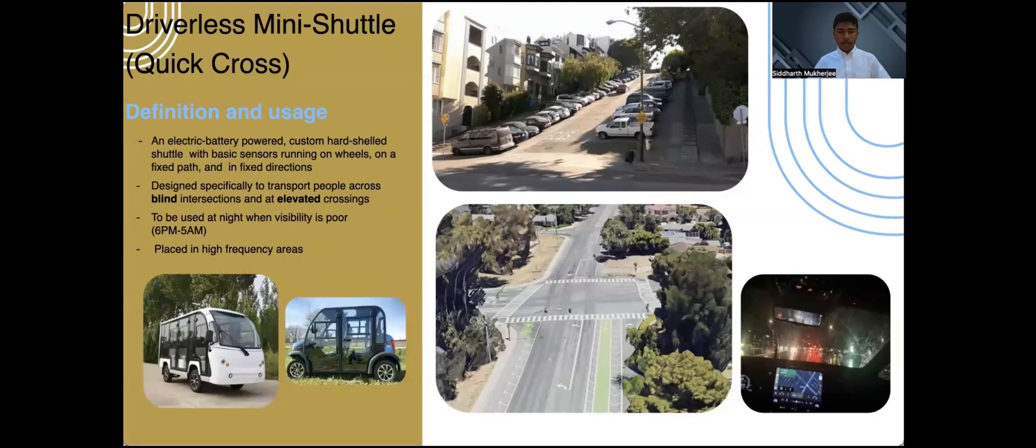Every year, the majority of traffic-related deaths are due to cars crashing with pedestrians at blind turns. Our next proposal is an unorthodox solution that includes a driverless mini-shuttle called Quick Cross. This vehicle is specifically designed to transport people at blind intersections and at elevated crossings such as hills. It is much less likely for a car to miss a shuttle compared to a pedestrian.